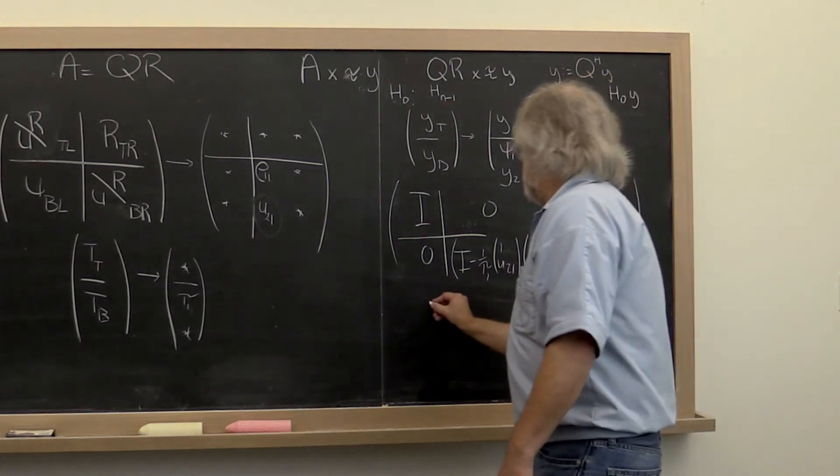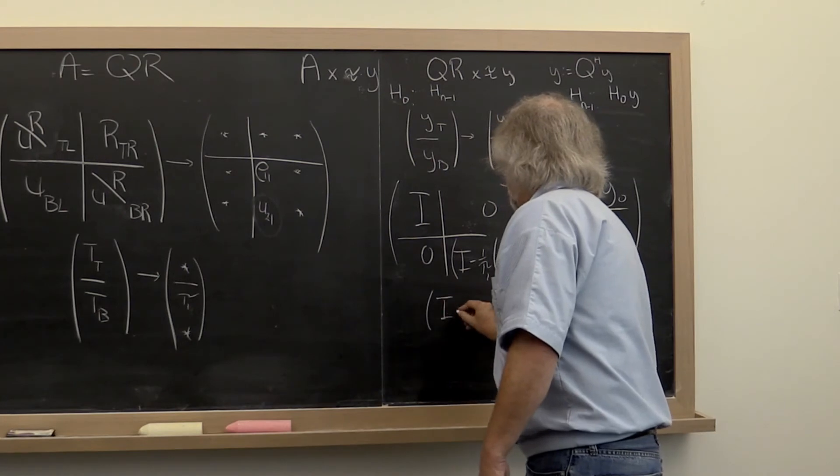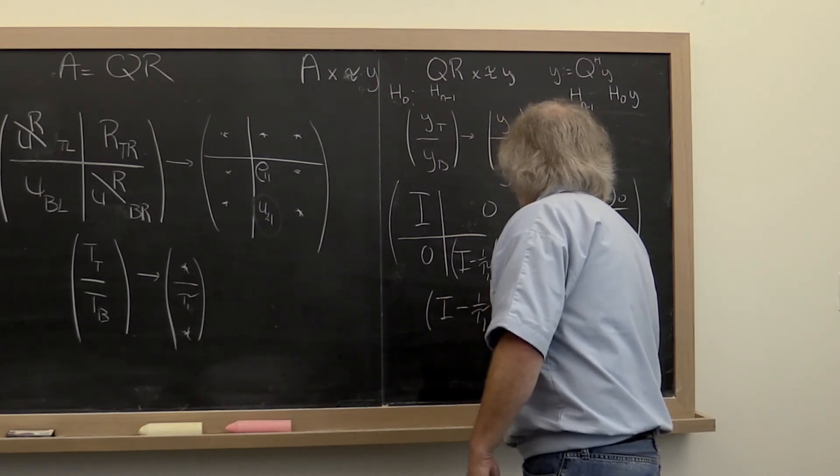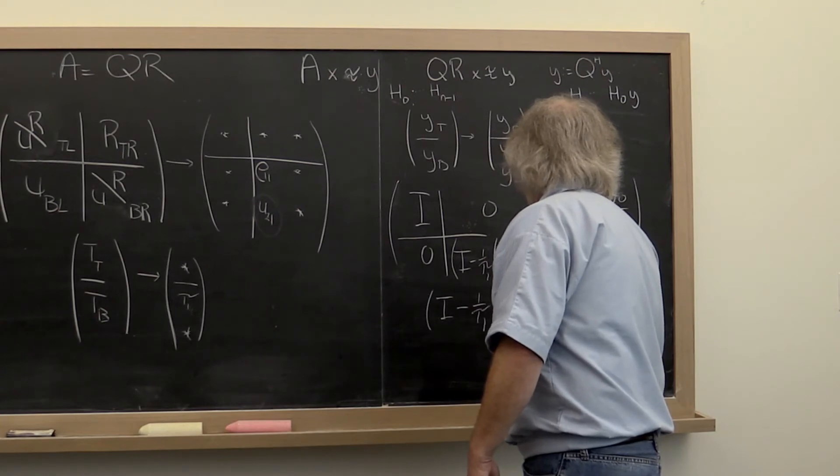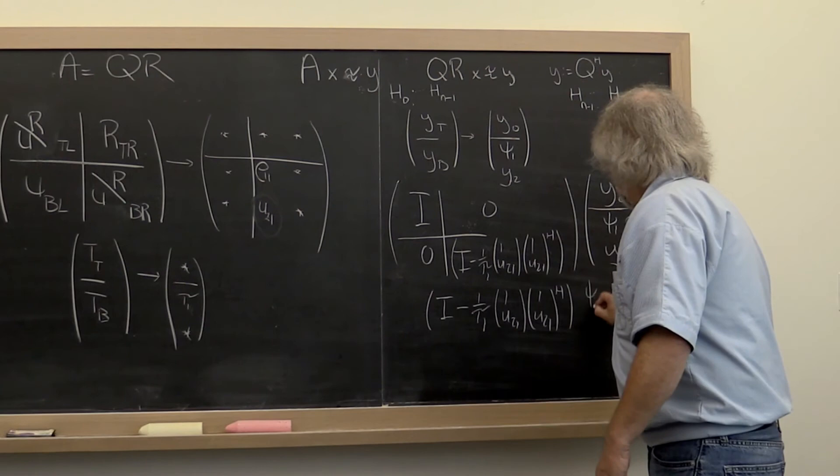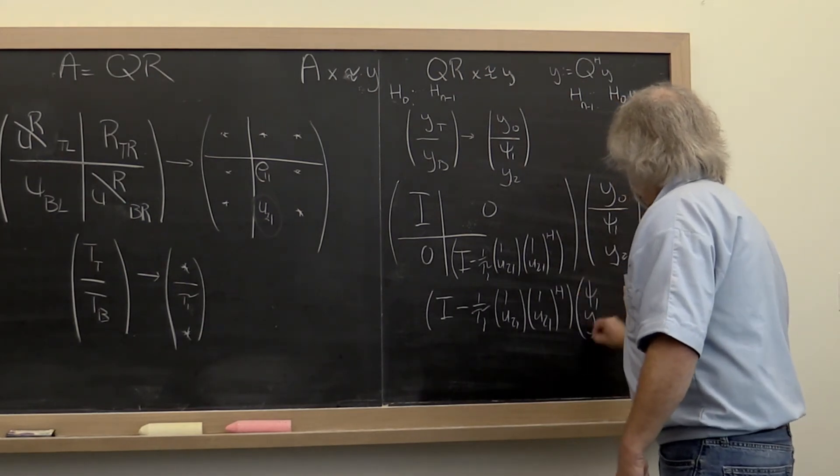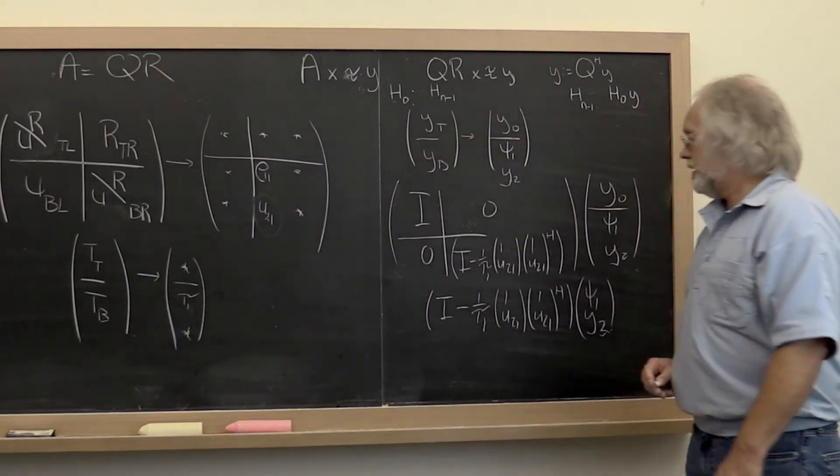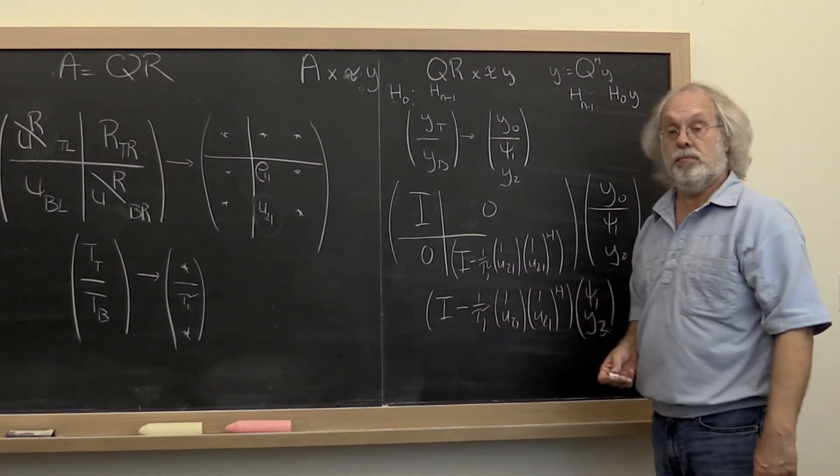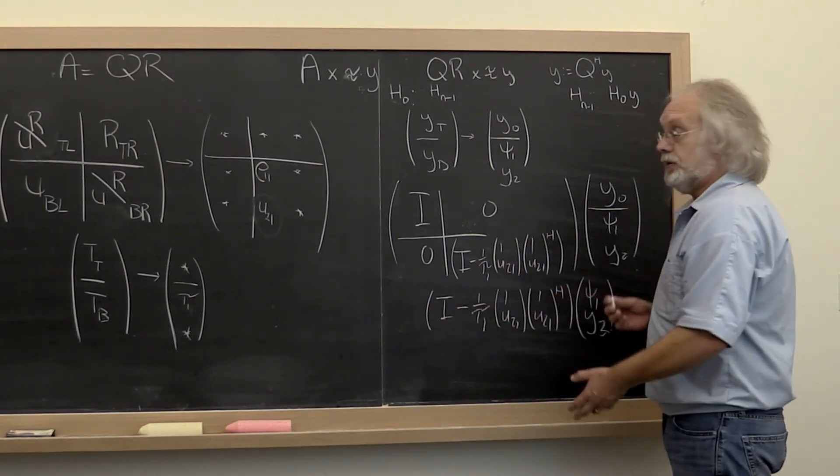And that can be done. That means the following computation. Now again, you could explicitly go and form this particular matrix and then do the matrix vector multiply.